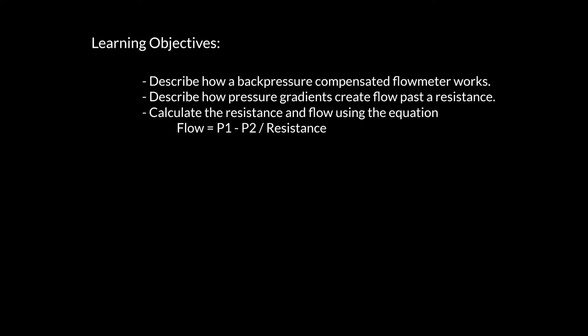Our learning objectives today are to learn about back pressure compensated flow meters and how they work — the components of this mechanical device. We're also going to learn how to describe pressure gradients and how, when we do that, we create flow, usually past a known or unknown resistance. We're going to see how these elements come together within the equation: flow is a result of a pressure gradient overcoming resistance.